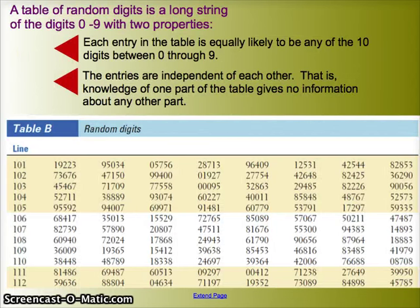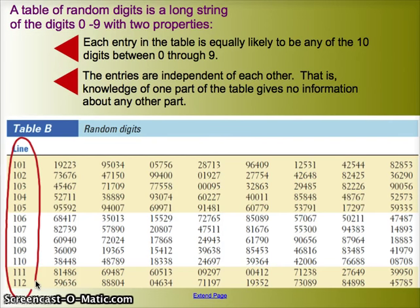This is literally a picture of Table B in your book. It is a table of random numbers. That is, there is no pattern whatsoever to the numbers you see here. Just in terms of using the table, note that these are just line numbers. They are not part of the random numbers.